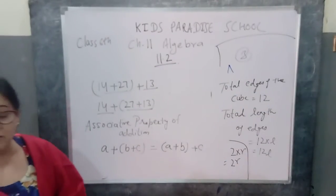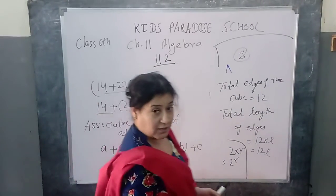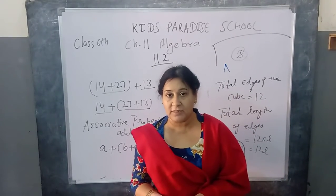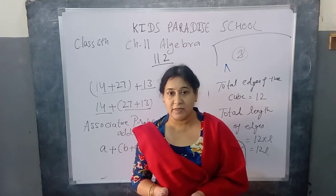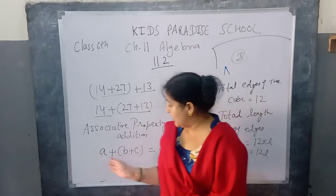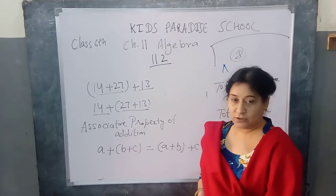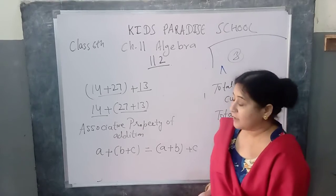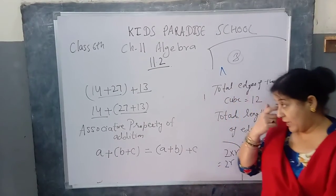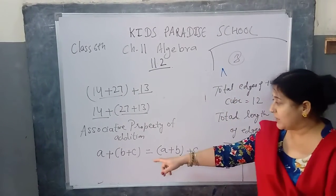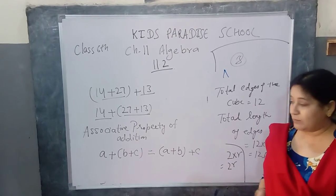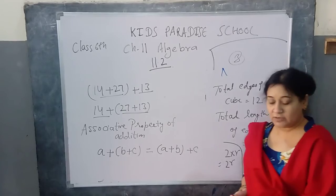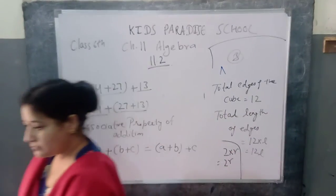These types of properties — you can also write as whole number properties — like the commutative property, the distributive property, and the associative property. These can be expressed in general form using variables A, B, C. Thank you.